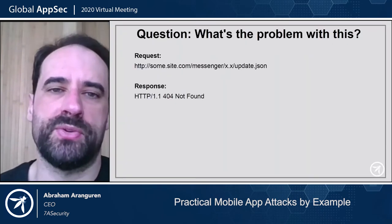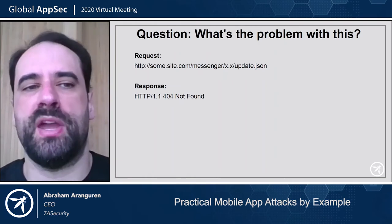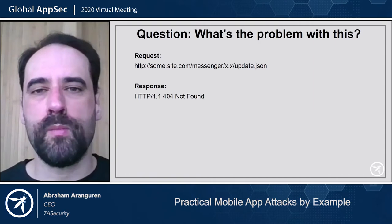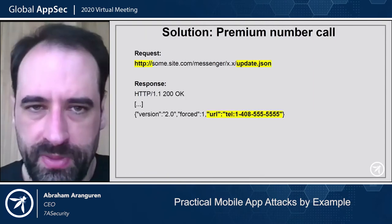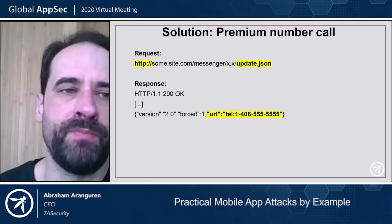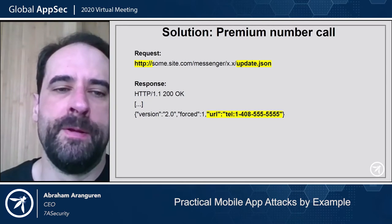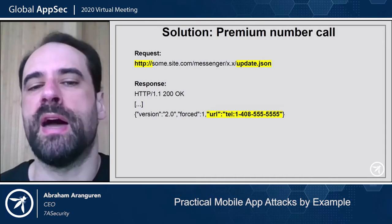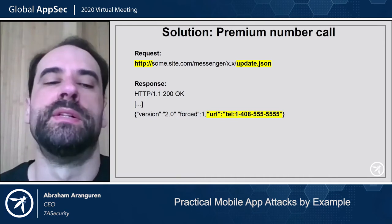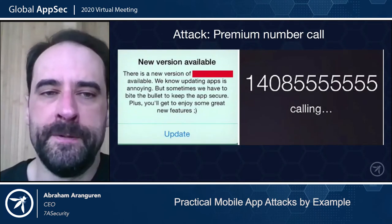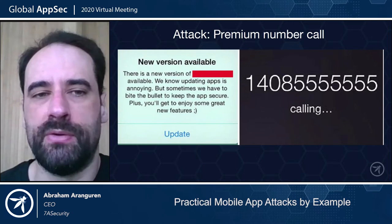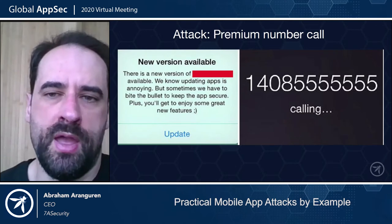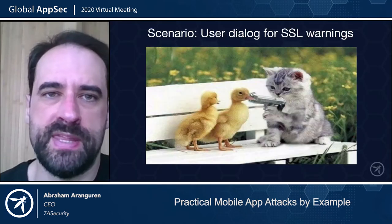Now let's look at update checks. If an application is doing an update check, pause the video and try to guess the problem. The issue is the update is being checked over clear text HTTP. The app retrieves a JSON file, so we can modify the response — instead of providing the real download URL for the update, we can provide a URL that is actually a phone URL. So when the user clicks update, instead of getting the update, they are calling a premium number.